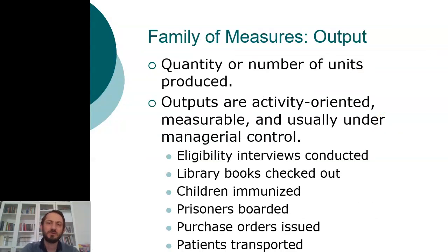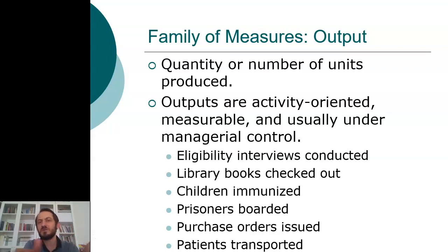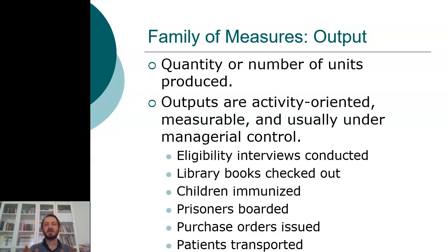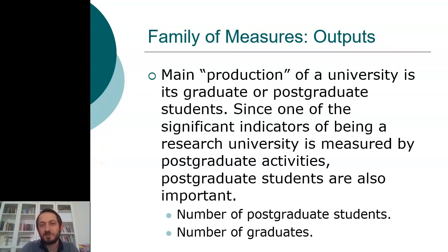In order to understand our performance, we should refer to performance measures. It can firstly be an output. Output is the quantity — the number of units produced. For example, the number of books that you have read, children immunized, patients transported. These criteria are related to the number of jobs that you have done; it does not tell us anything about the quality of the work. For a university, what we produce are graduates, so our output would be the number of graduate students.